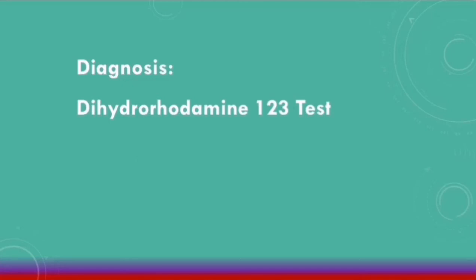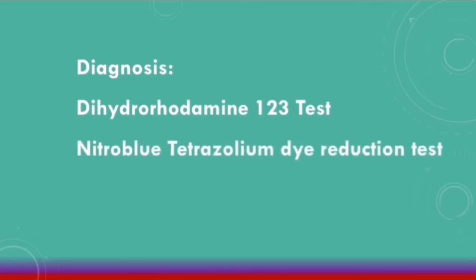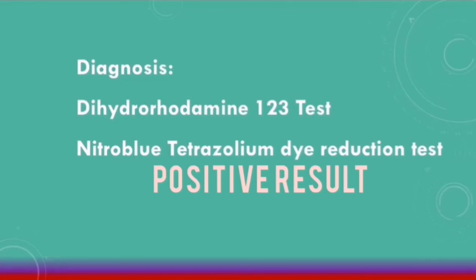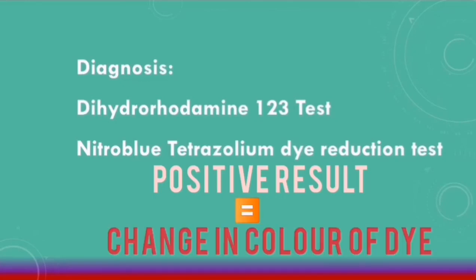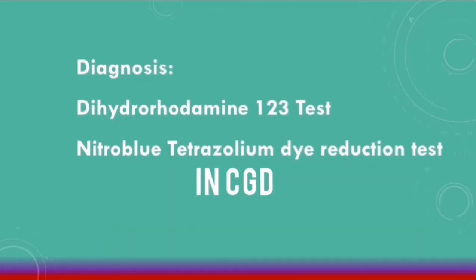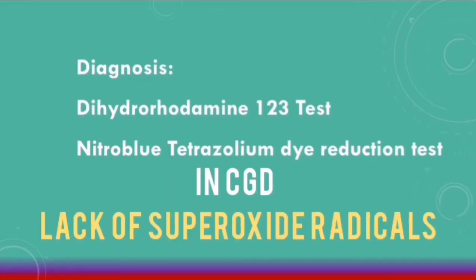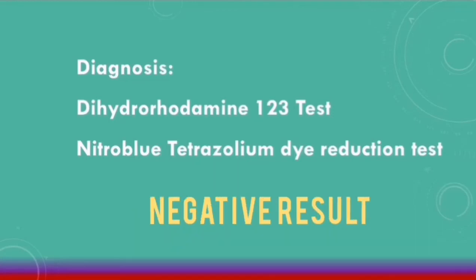Another test that can be used is the nitro blue tetrazolium (NBT) dye reduction test. This test detects levels of superoxide radicals, so a positive result leads to a change in the color of the dye. In chronic granulomatous disease, due to the lack of superoxide radicals, there will be a negative result on the NBT dye reduction test.